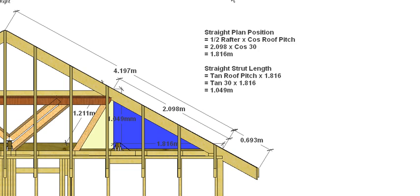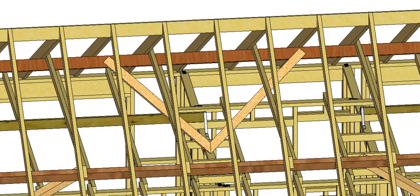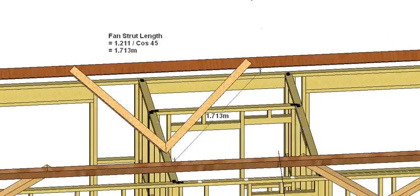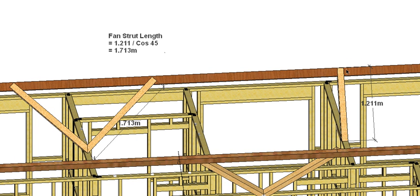All of this will become apparent why we need it when we get into the span tables. Looking at our struts: we've worked out the straight strut length as 1.049m and the inclined strut as 1.211m. There may also be situations where we need a fan strut — these are commonly set at 45 degrees. Using the same approach with cos(45°): 1.211 divided by cos(45°) gives us a fan strut length of 1.713m.